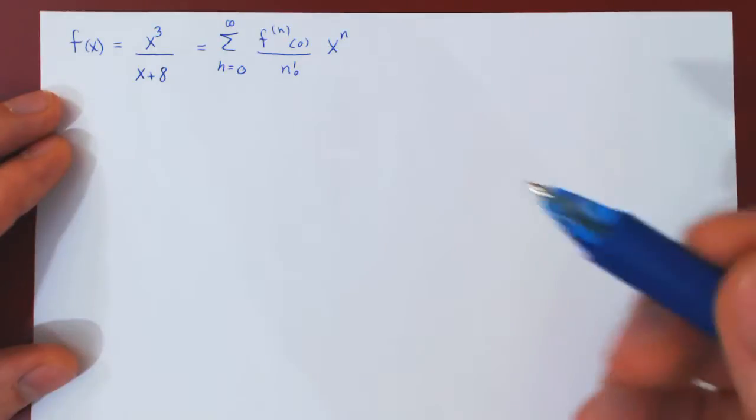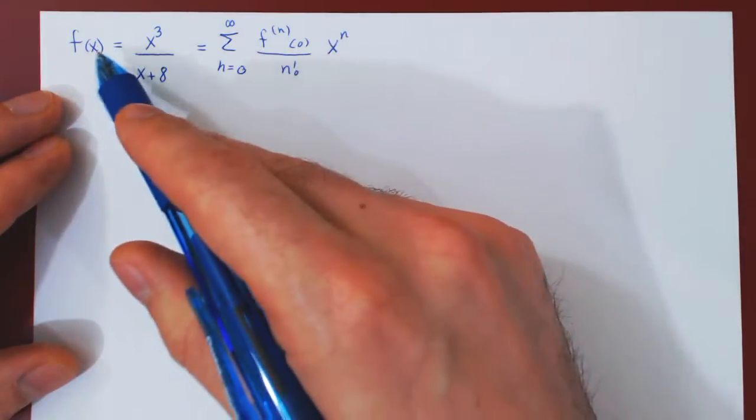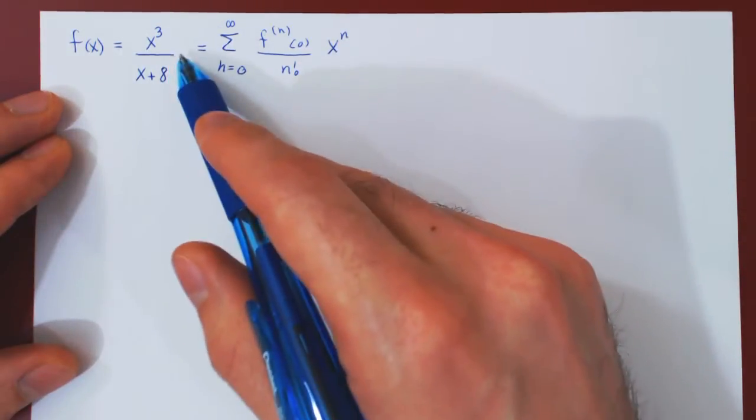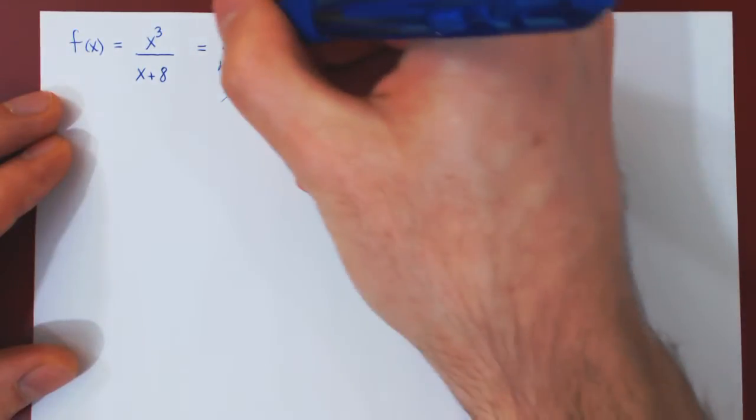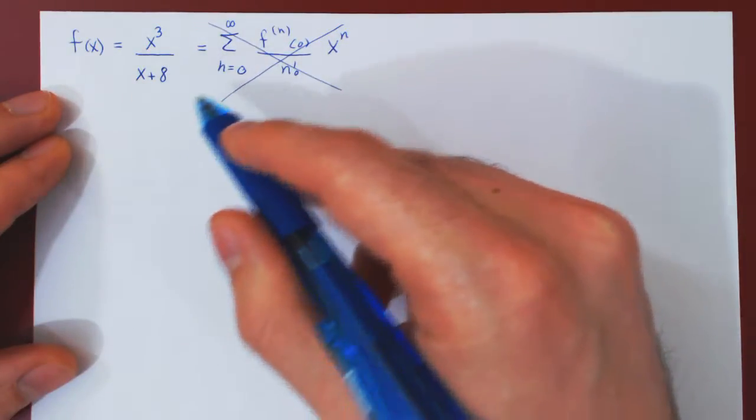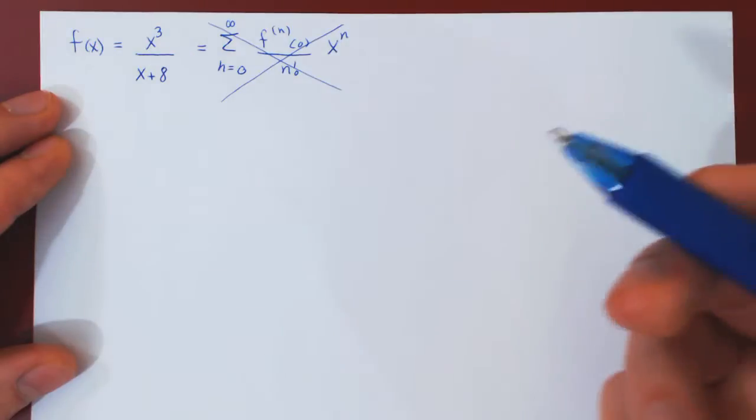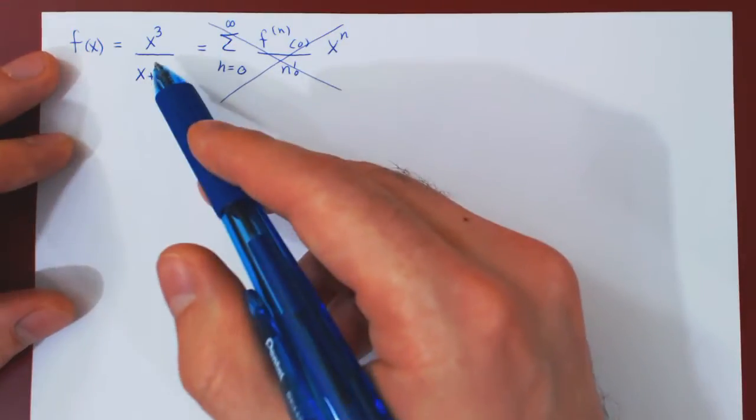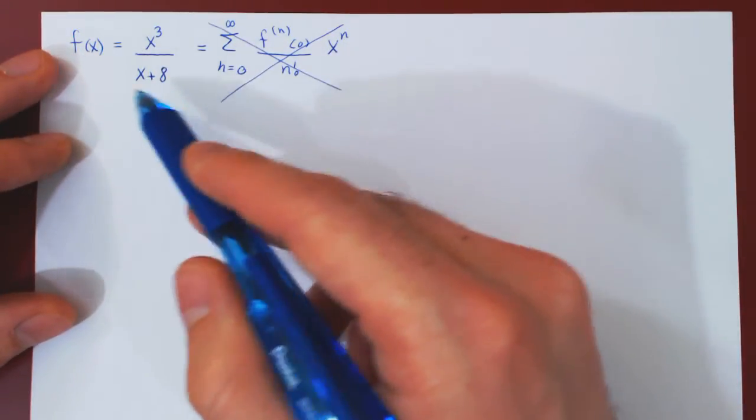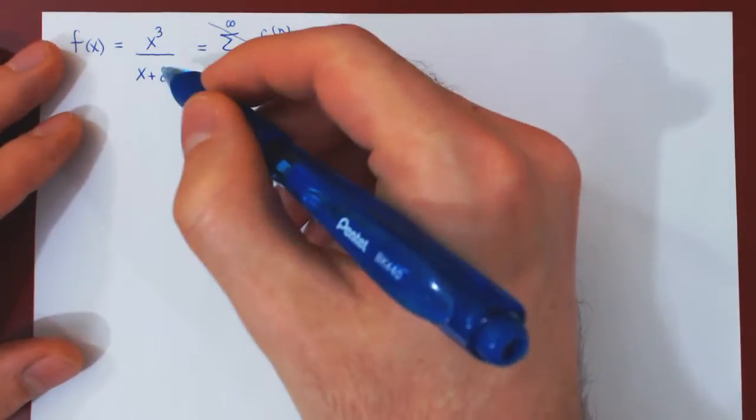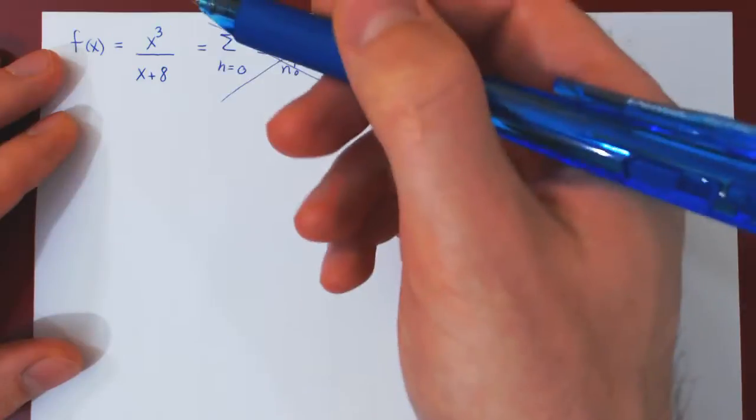But sometimes there are shortcuts, better ways of finding the Maclaurin series than finding higher derivatives and looking for a pattern. And this is such an example. So here we will not find the Maclaurin series by finding the higher derivatives of this function, then evaluating at 0 and hopefully seeing a pattern. Because one, there's a way around it, and two, if you think about this, the function gives you a quotient, and every time you differentiate this function, you'll have a more and more complicated quotient. So taking higher derivatives of this function is actually not very pleasant, and finding the pattern is not so obvious.